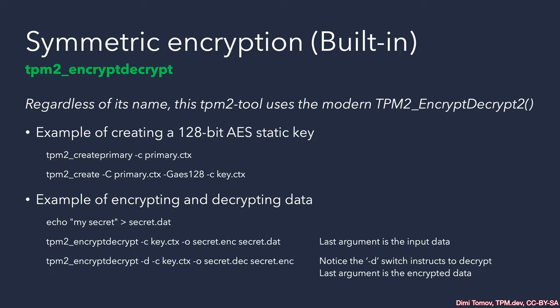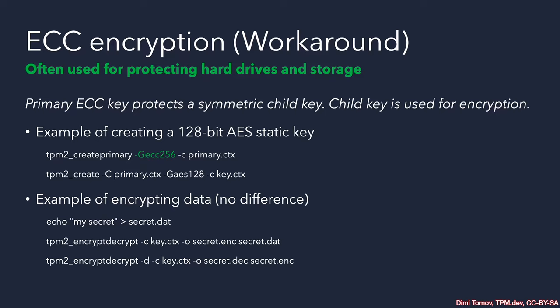Using the TPM tool and CryptDecrypt tool, we can use our child key of symmetric type and decrypt input data, either from standard input or from a file as a last argument to the tool. The output is stored in a file pointed to by the D-O switch. Using the same tool and just adding the D-D switch, we are instructing the TPM to decrypt our data.